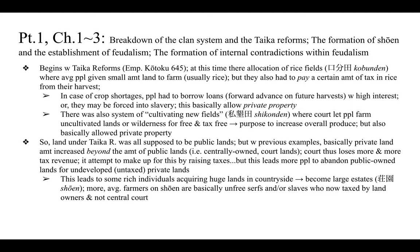In theory under the Taika Reforms all land was supposed to be public, on lease from the lords, but in reality people functioned essentially as independent producers. Through the Shikonden system the amount of private lands increased beyond public court-owned lands, so the court lost more and more tax revenue. Attempts to raise taxes led more people to abandon public land for untaxed private lands — a serious problem.